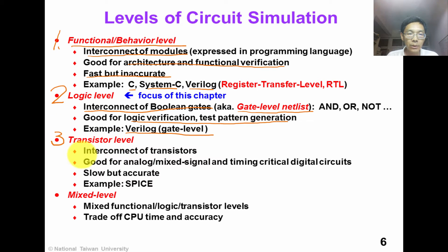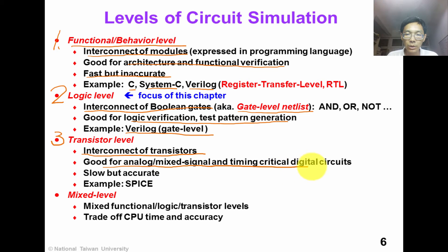The third level of simulation is transistor level simulation. In this level, circuits are represented as interconnects of transistors. This simulation is good for analog, mixed-signal, and timing-critical digital circuits. This simulation is very slow but the resolution is very accurate.